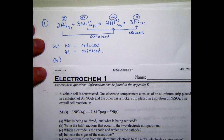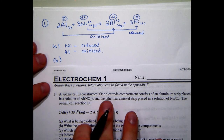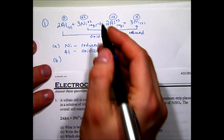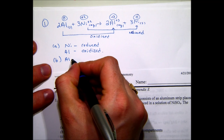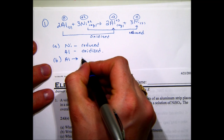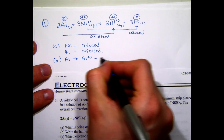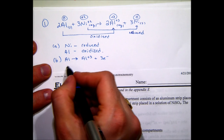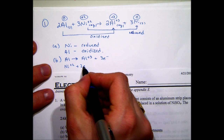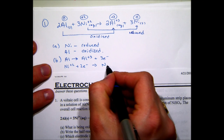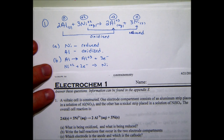Question (b) asks to write the half reactions that occur in the two electrode compartments. We have aluminum being oxidized and nickel being reduced, giving us our two half reactions.